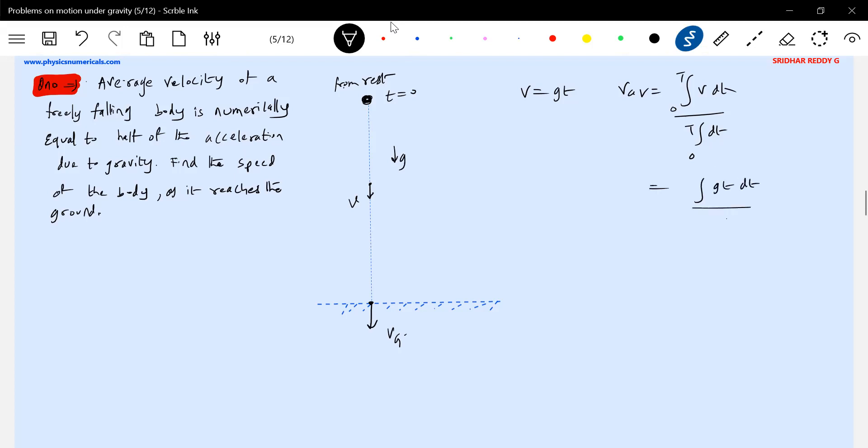Therefore this will become integral gt dt. Taking g out, this will become t squared by two on integrating, with limits.